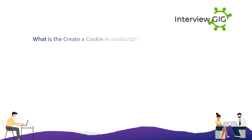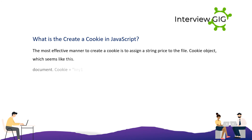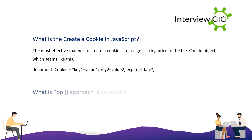Creating a cookie looks like this: document.cookie = 'key1=value1; key2=value2; expires=' + date. What is the pop method in JavaScript? The pop method is similar to the shift method, but the difference is that the shift method works on the beginning of the array.